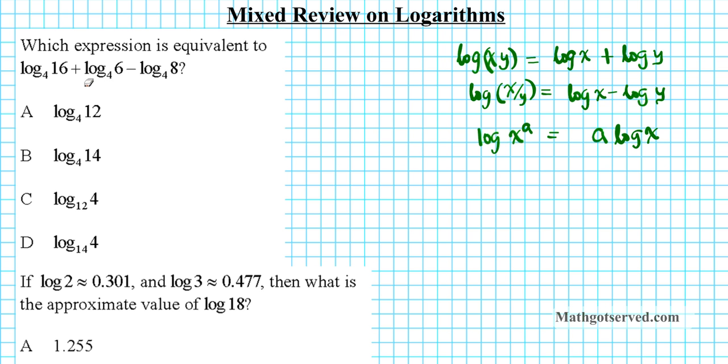So what we're going to do is we're going to condense this logarithmic expression. So here we have a product, then we have a sum. Using the product property, this can be converted into a product and this minus can be converted into a quotient. So we can rewrite this as log base 4 of 16 times 6 divided by 8. So we see the plus becomes a times, the minus becomes a division.